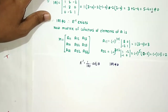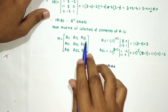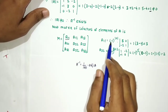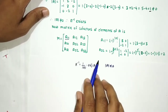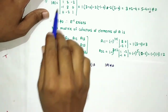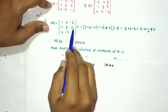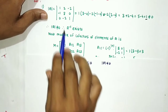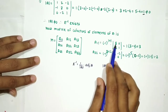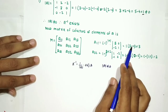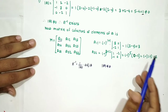We find cofactor A₁₁: it equals (−1)^(1+1) times the determinant of the submatrix obtained by deleting row 1 and column 1. That gives (−1)² × [3×1 minus 0×(−2)] = 1 × 3 = 3.